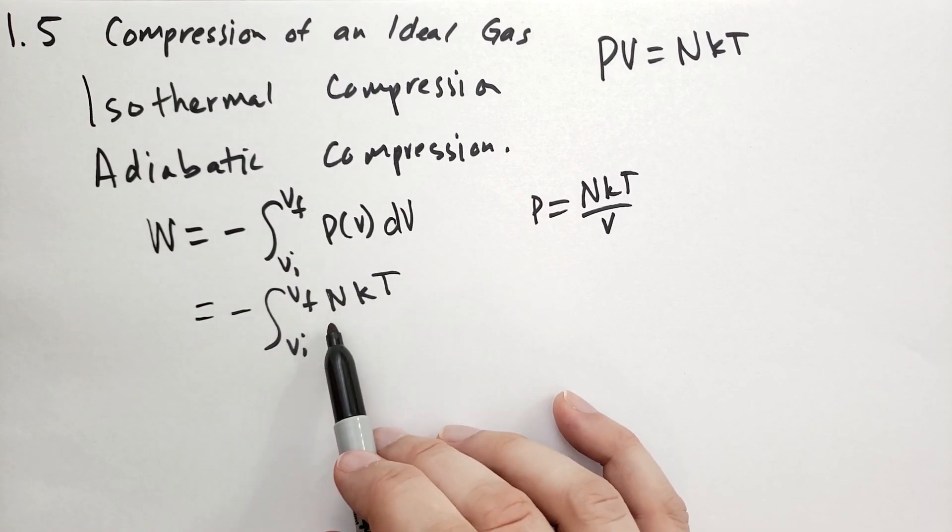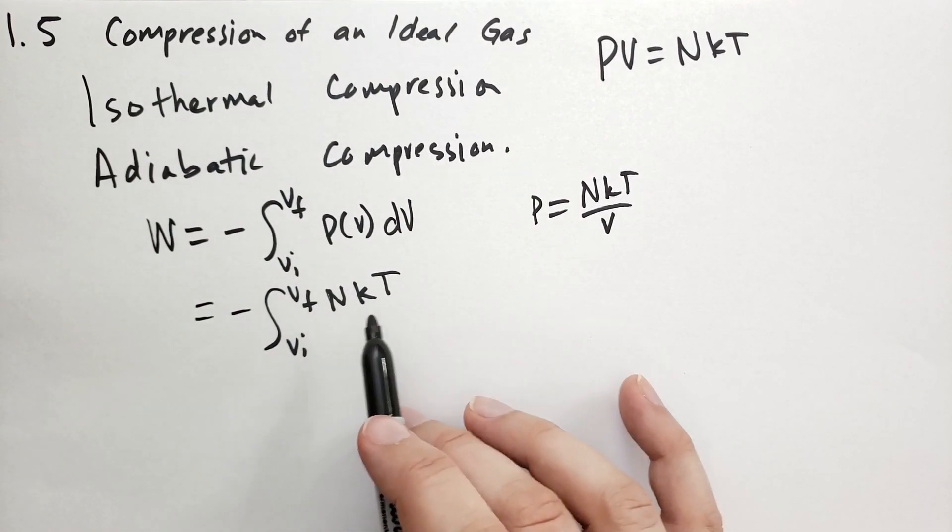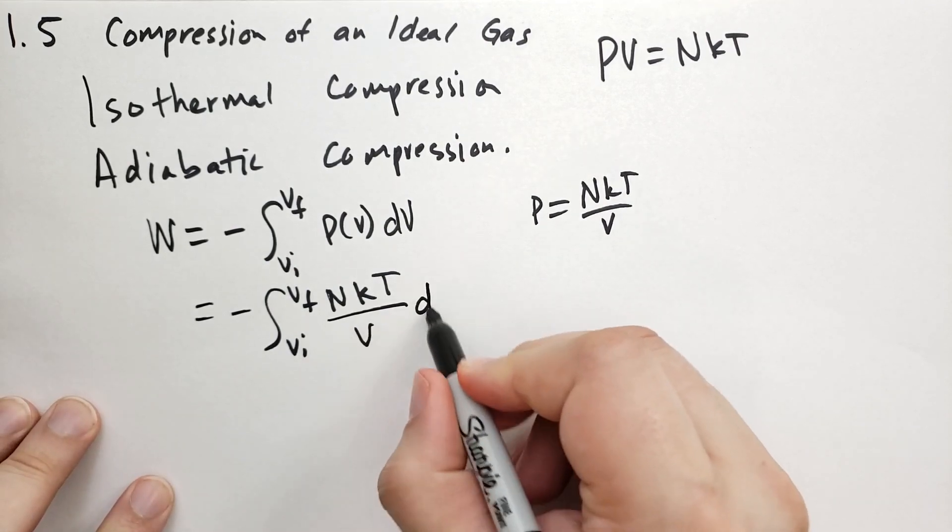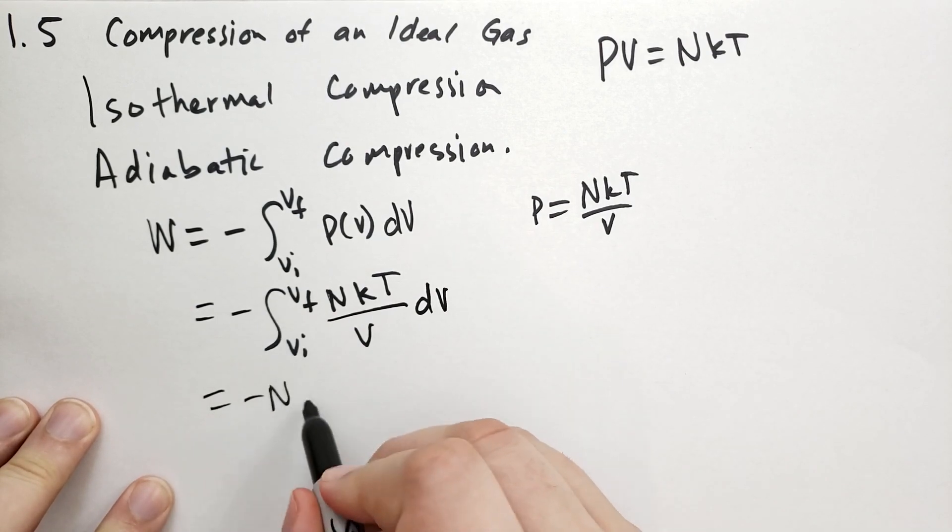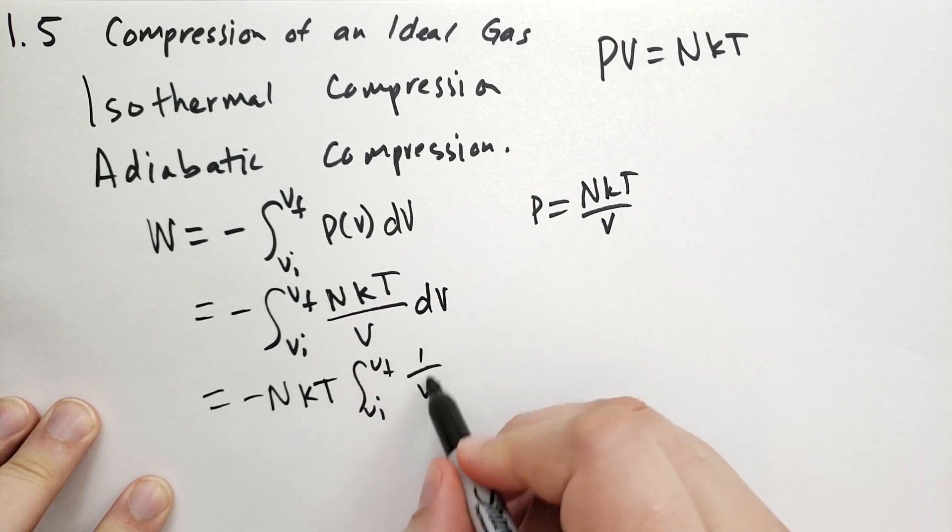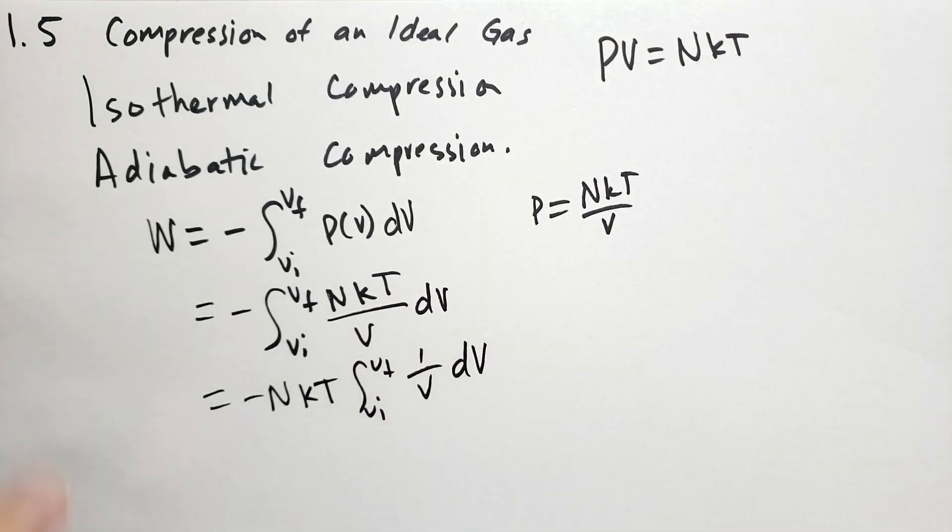So the number of particles isn't going to change, Boltzmann's constant isn't going to change, and we're maintaining a constant temperature as well. So we could pull out those, and we just have minus NKT, the integral from Vi to Vf of 1 over V, dV.